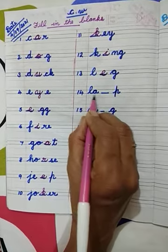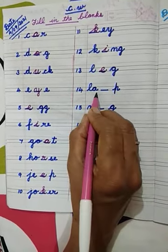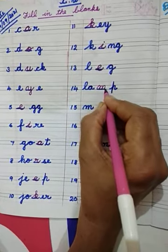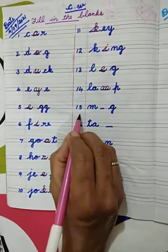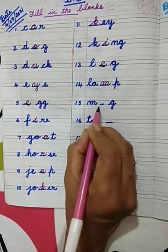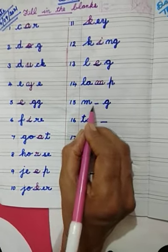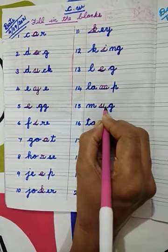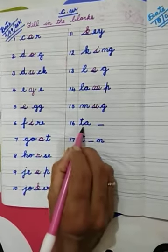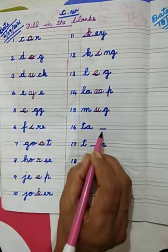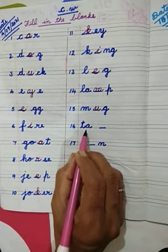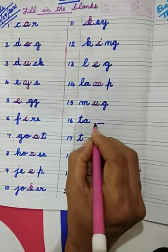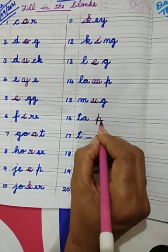Number 14: L-A-P. Spelling of lamp: L-A-M-P. Letter M. We have to write here and complete the weight lamp. Number 15: M-G. Which letter is missing here? This is the weight mug. Spelling of mug: M-U-G. Letter U. Number 16: T-A-D. Last letter is missing here. Spelling of the weight tap: T-A-P. We have to write here letter P and complete the weight tap.